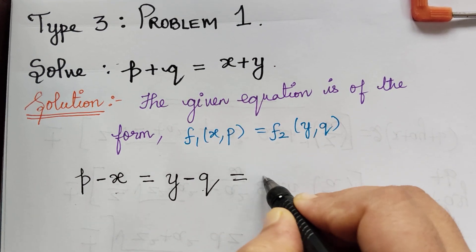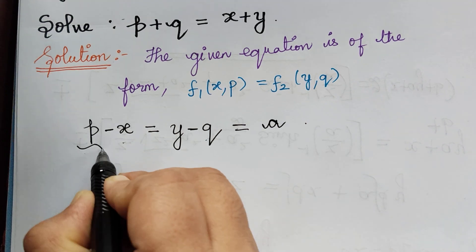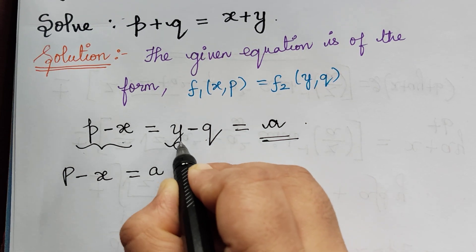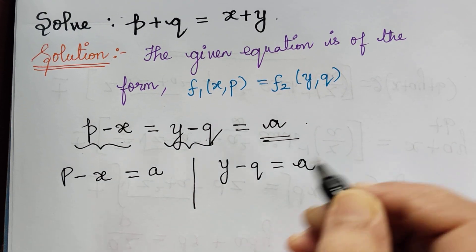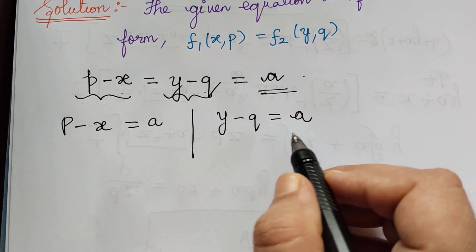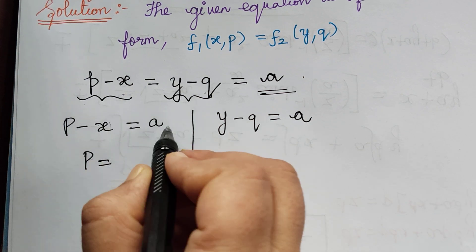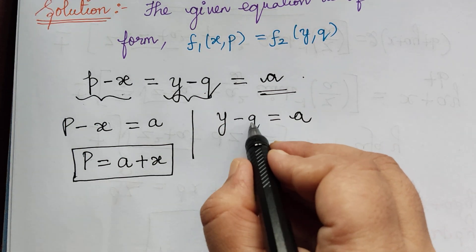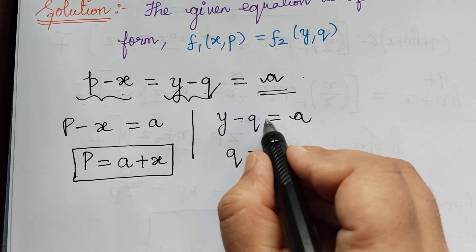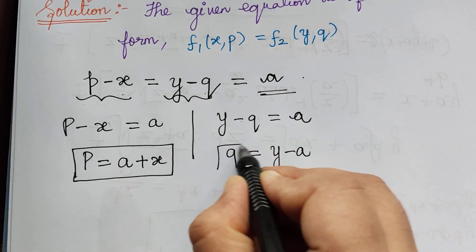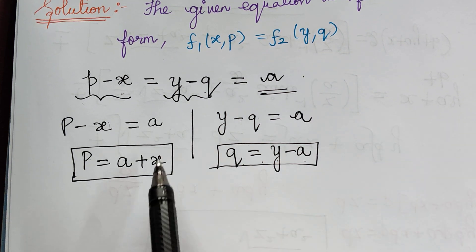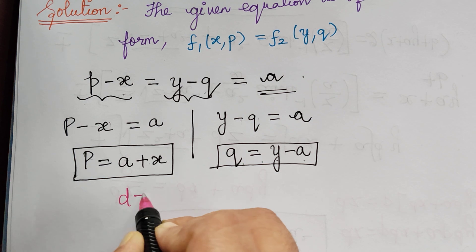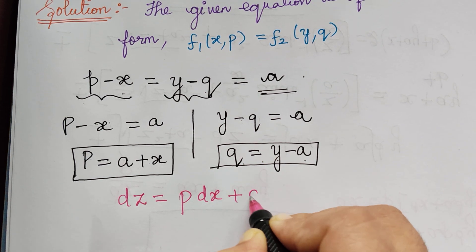Bringing x to the left, we get p minus x equal to, and bringing q to the right, we get y minus q. So we have gathered x and p to one side and y and q to the other side. Now we equate both to a constant a. So p minus x = a, and y minus q = a. From these two, we obtain the values of p and q: p = a + x, and q = y minus a.